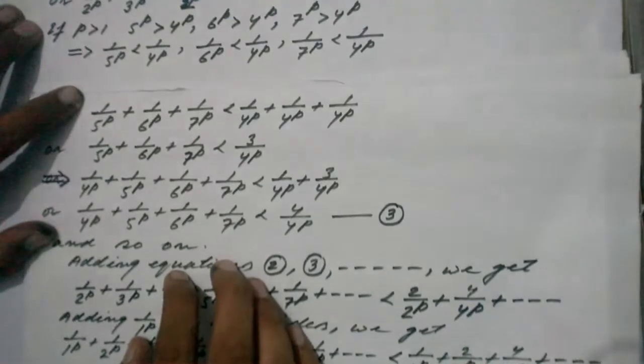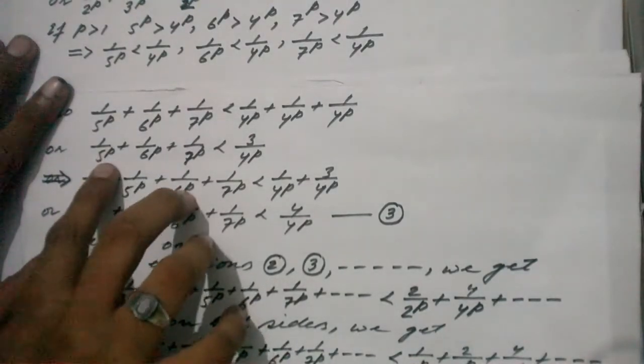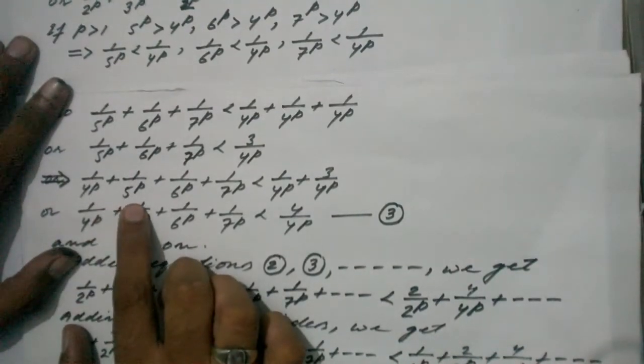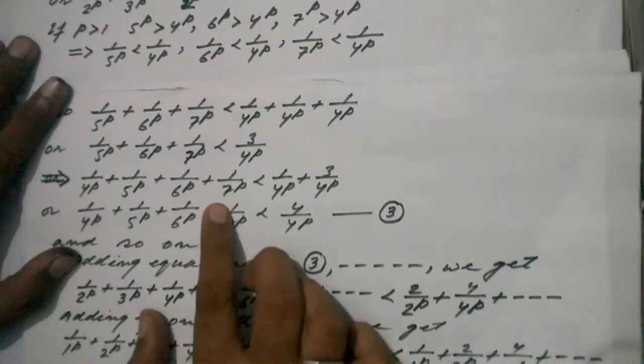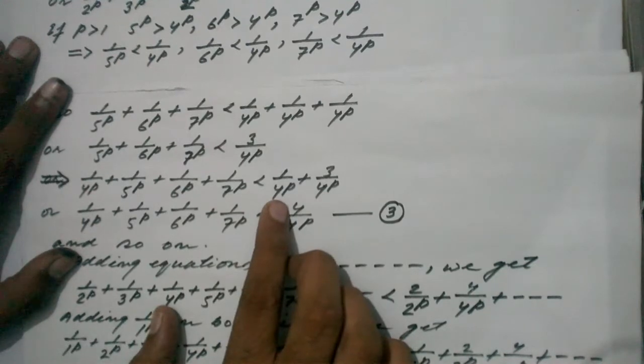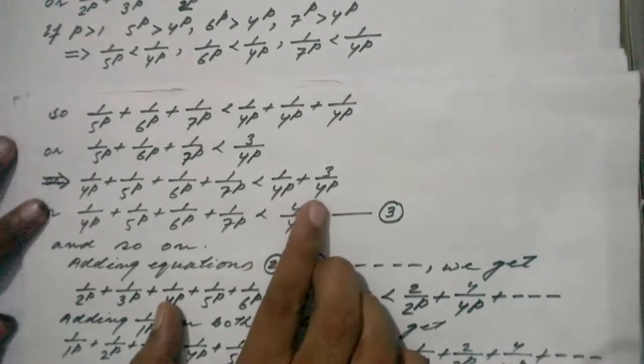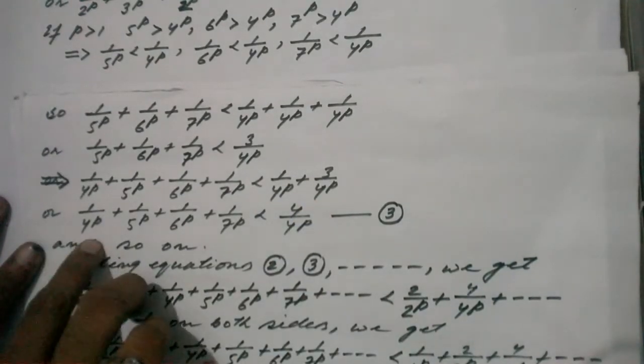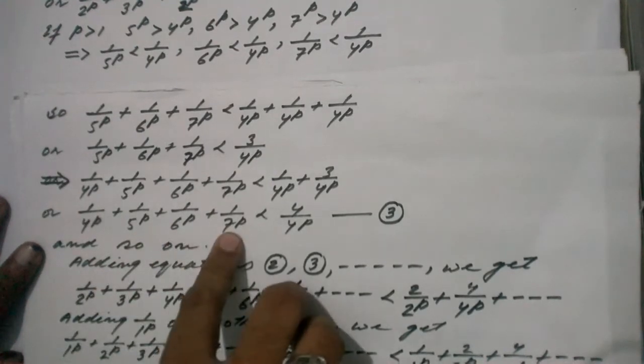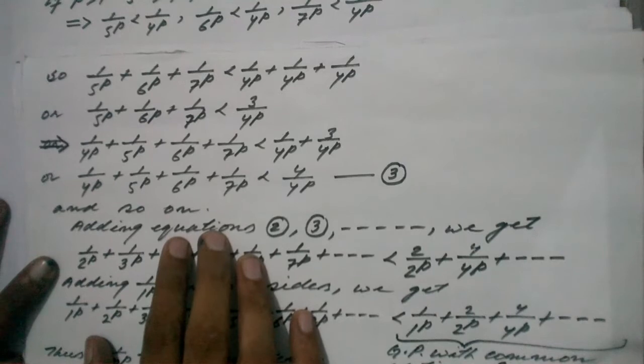Now adding 1/4^p on both sides of this inequality, we get 1/4^p + 1/5^p + 1/6^p + 1/7^p < 1/4^p + 3/4^p = 4/4^p. Let this be equation number 3. We proceed this process an infinite number of times.